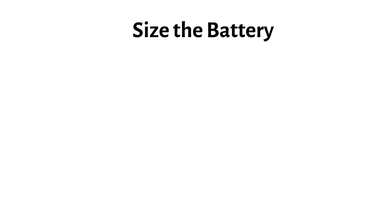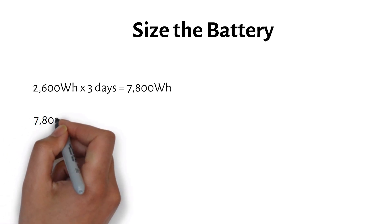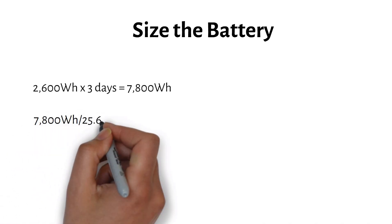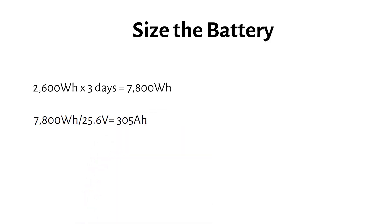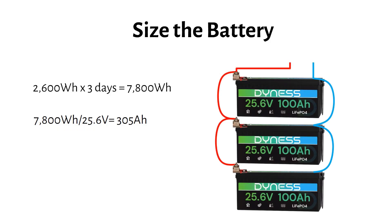Now, let's size the battery. I take 7800 watt-hours and divide by 25.6V nominal and get 305Ah. I install three 24V 100Ah batteries in parallel.